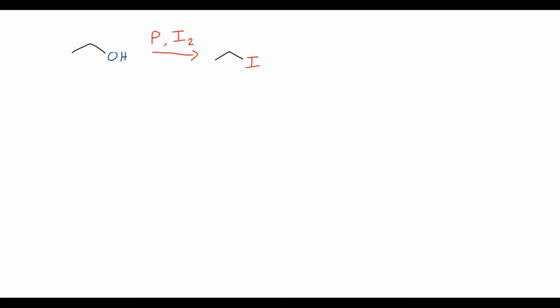because what actually ends up occurring is that phosphorus triiodide is formed in situ. So in situ, meaning inside the reaction vessel, without isolating that reagent. Because PI3 is very difficult to isolate and store, so it's much easier to just form it in your reaction flask.